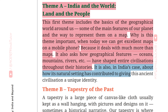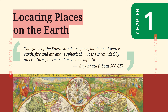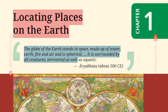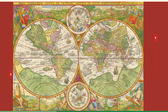It is also, in India's case, about how its natural setting has contributed to giving this ancient civilization a unique identity. भारत के मामले में यह भी है कि कैसे इसकी प्राकृतिक सेटिंग ने इस प्राचीन सभ्यता को एक अद्वितीय पहचान देने में योगदान दिया है। As Aryabhata (about 500 CE) wrote: 'The globe of the earth stands in space made up of water, earth, fire and air and is spherical. It is surrounded by all creatures, terrestrial as well as aquatic.'